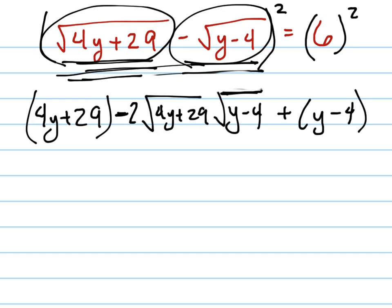And then we're going to get the last term is going to be this times itself, which becomes a positive. And again, I don't need the parentheses, but I'm going to do it just so you can see that it's together. It's going to be a positive y minus 4. And that whole thing is going to equal 6 squared, which is 36.